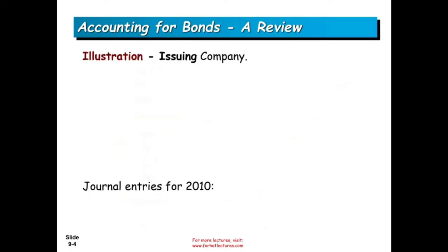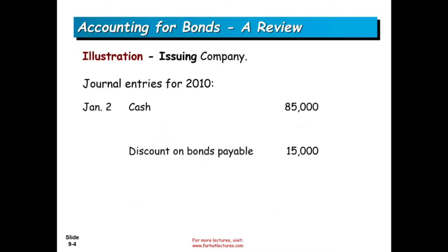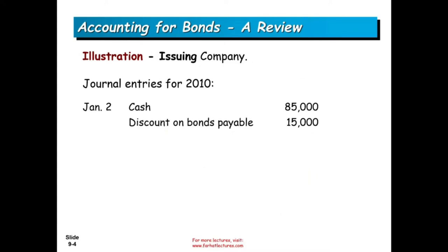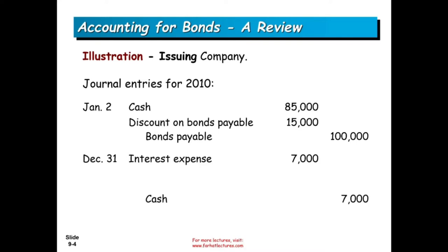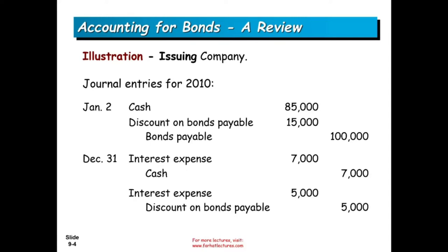This is what the issuing company would enter: debit cash $85,000, debit discount on bonds $15,000, and credit bonds payable $100,000. Then they have to pay interest every year for $7,000, and they have to amortize the discount, which will increase interest expense. Notice: when the discount goes down, our interest expense goes up. Those are the entries that the issuing company would make — they pay cash and amortize the discount.